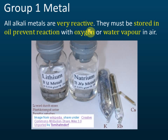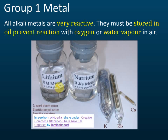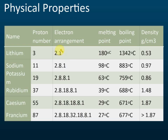Group one metals are very reactive and must be stored in oil — usually paraffin mineral oil — to prevent reaction with oxygen or water vapor in the air. Lithium and sodium are put into oil, while potassium, rubidium, and cesium are stored in sealed tubes.